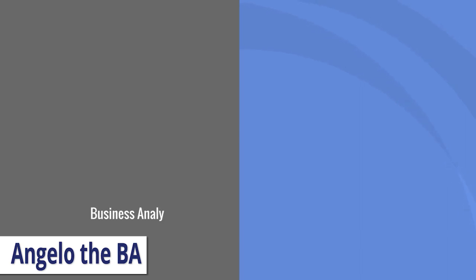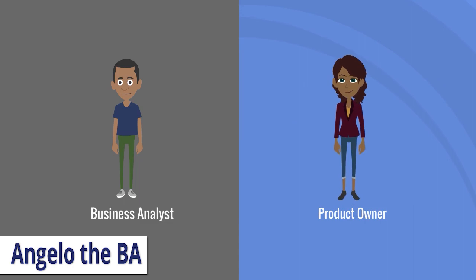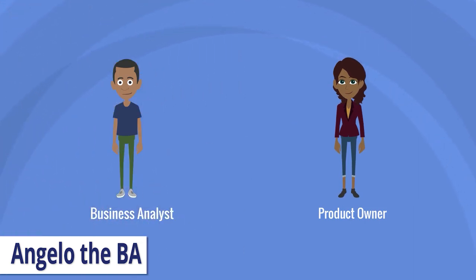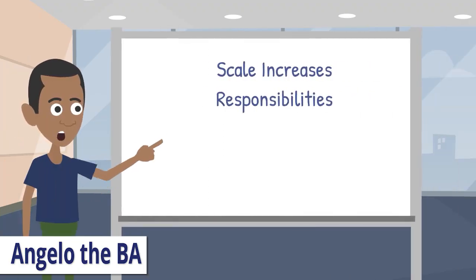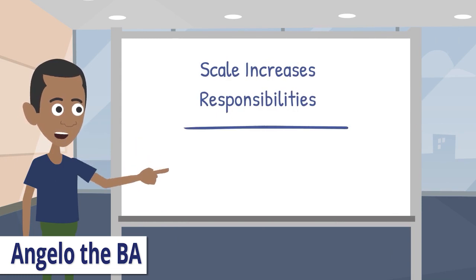I was recently asked to explain about the hard line between a business analyst and a project owner. So here it is — there isn't one. In truth, it's usually a matter of scale and scope that determines the final responsibilities of the players involved.